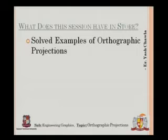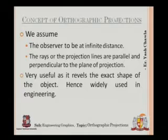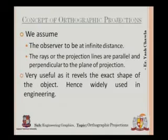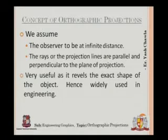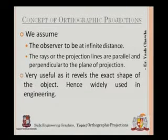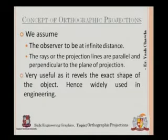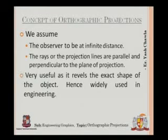Today we are going to solve examples of orthographic projection. Now the concept of orthographic projections is being repeated so that you have a brush-up. In this, we have to assume that the observer is at an infinite distance from the object — the distance between the observer and the object on the screen is infinite. That's when we can assume that the lines are parallel — parallel rays pass through the object and go onto the screen so that the observer can see the orthographic projection clearly and the exact shape is revealed.